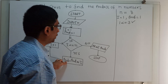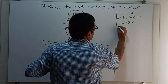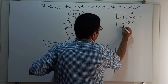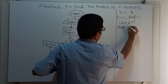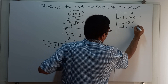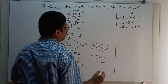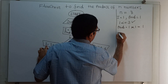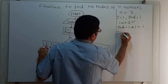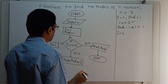Prod equal to prod into i, that is 1 into 1, which is equal to 1. Now i equal to i plus 1, so i equals 2.